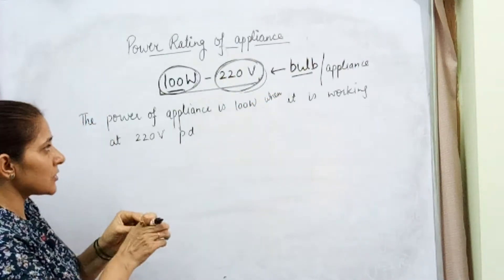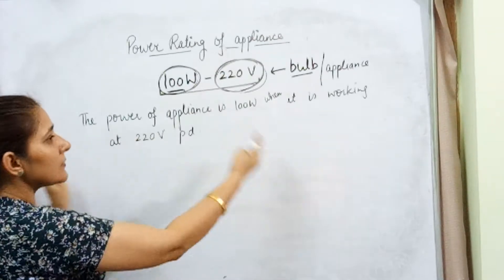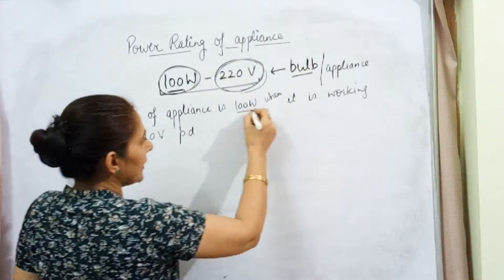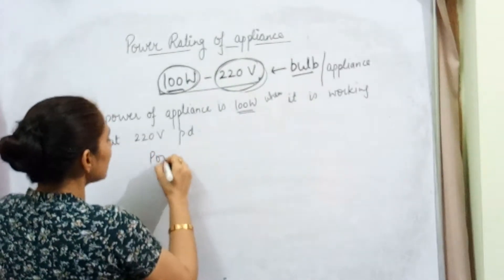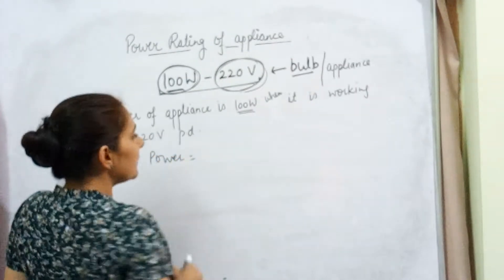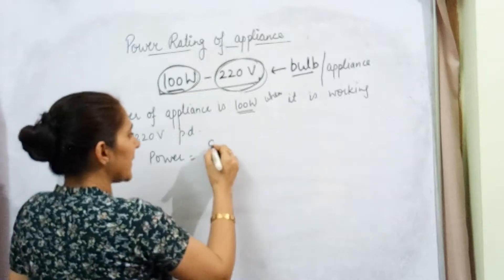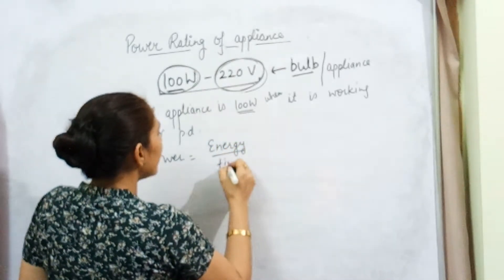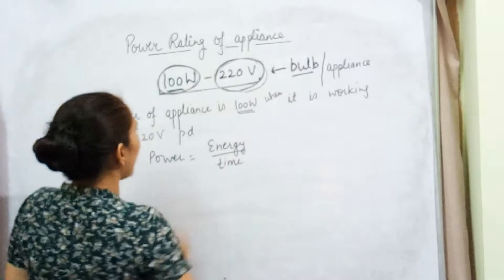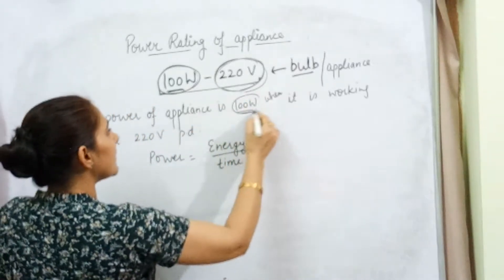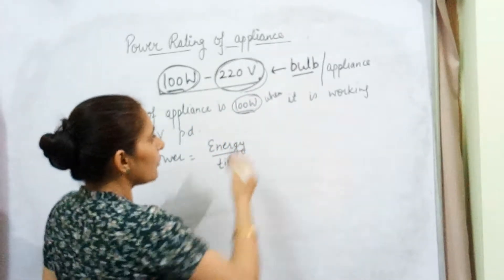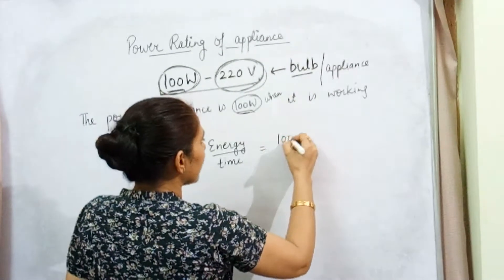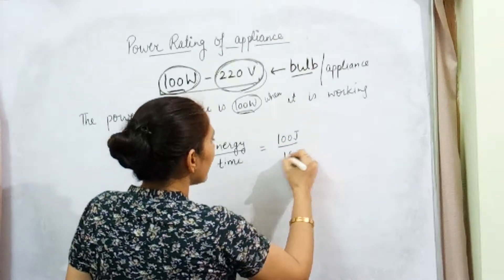If somebody asks you to expand this particular wording, what can you do? We are aware that power is also given by work done per unit time, or energy upon time. In this statement, the power of the appliance is 100 watt, so I can write 100 joules of energy in 1 second.